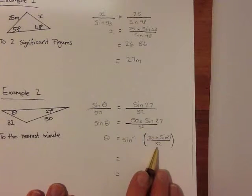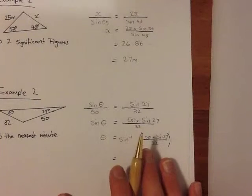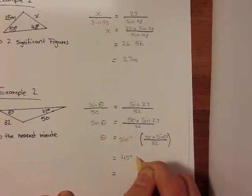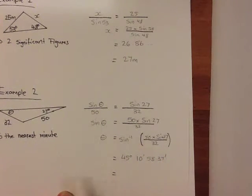Now, we put that in on our calculator, and our calculator will give us 45 degrees, 10 minutes and 58.37 seconds, and rounded to the nearest minute becomes 45 degrees, 11 minutes.